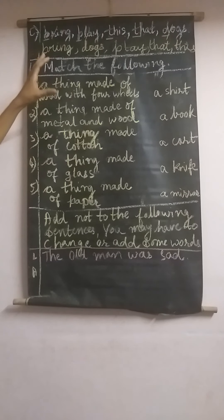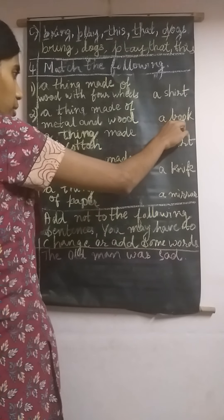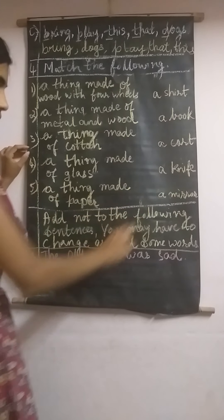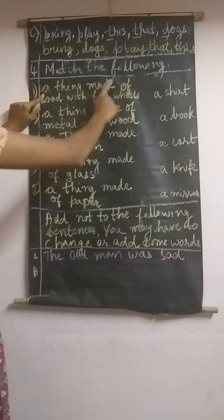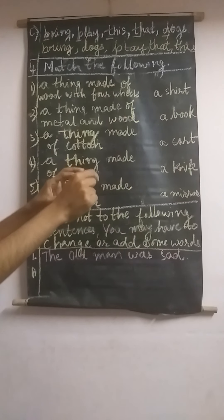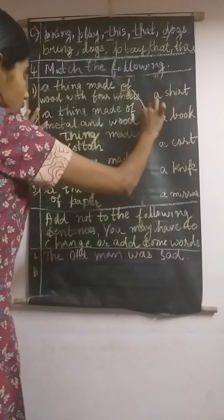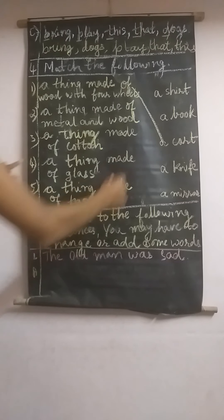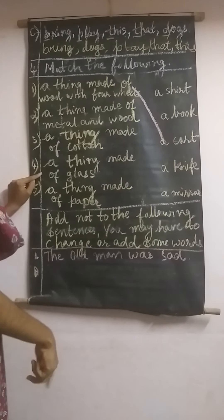Let's move to the match the following exercise. We have column A and column B, and we should match A with B. The answers given are: a shirt, a book, a card, a knife, a mirror. Let us read the questions. First: a thing made of wood with four wheels — what is it? It is a cart.